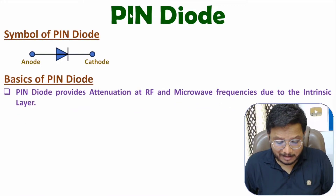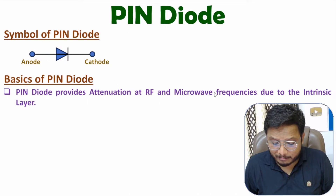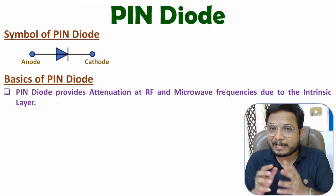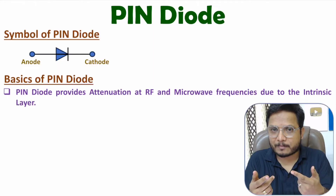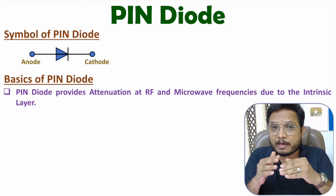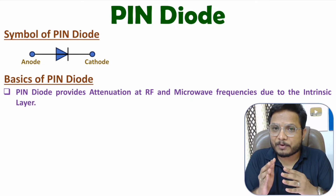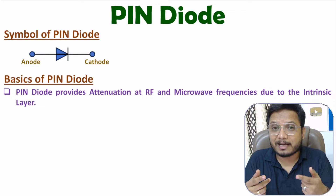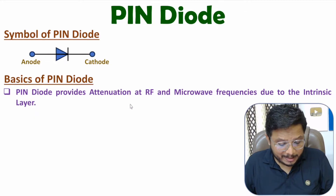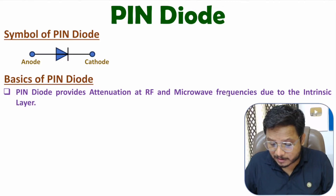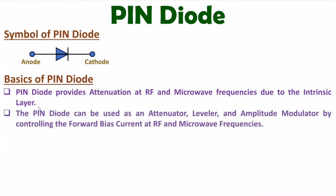The intrinsic layer provides attenuation at RF and microwave frequencies, and that attenuation happens by configuring the PIN diode in forward bias. In forward bias, the PIN diode acts like a variable resistor, which allows it to be used as an attenuator. Applications in forward bias include attenuator, leveler, and amplitude modulator — all at RF and microwave frequencies.